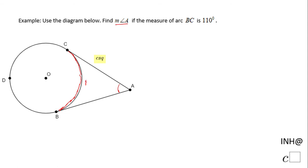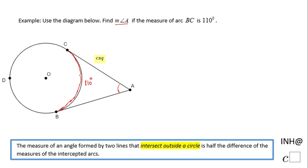If you notice, this is an angle that is created by two lines that intersect outside this circle O.